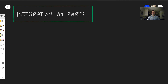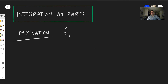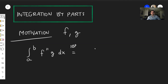Today I want to show you how to integrate by parts in higher dimensions. To motivate this, let me start with single variable calculus. Suppose you have two functions f and g defined on some interval a to b. Then if you want to integrate f double prime times g, integration by parts simply says this equals f prime times g evaluated from a to b, minus the integral of f prime g prime over a to b.